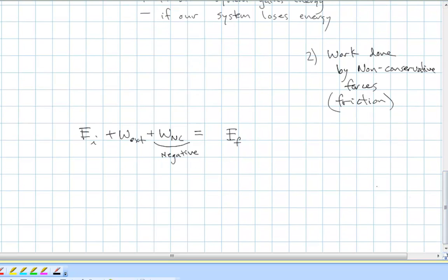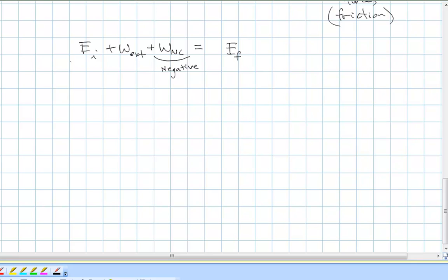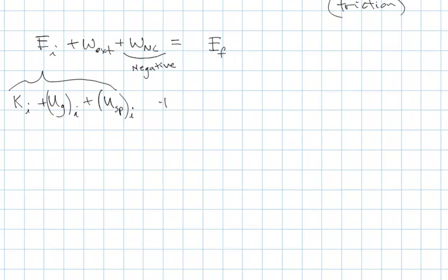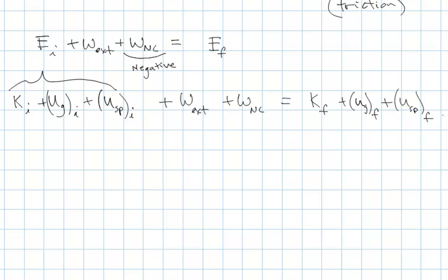So we're done. This is our equation. Let me write it out one more time, replacing the E's with the actual three types of mechanical energy we know. We have kinetic energy initial, gravitational potential energy initial, and spring potential energy initial — that's our initial mechanical energy — plus any external or non-conservative work, equals final kinetic energy, final gravitational potential energy, and final spring potential energy. When doing an energy conservation problem, write this out and cross off terms that don't apply. No springs? Cross those terms out. This is the equation I always start with.